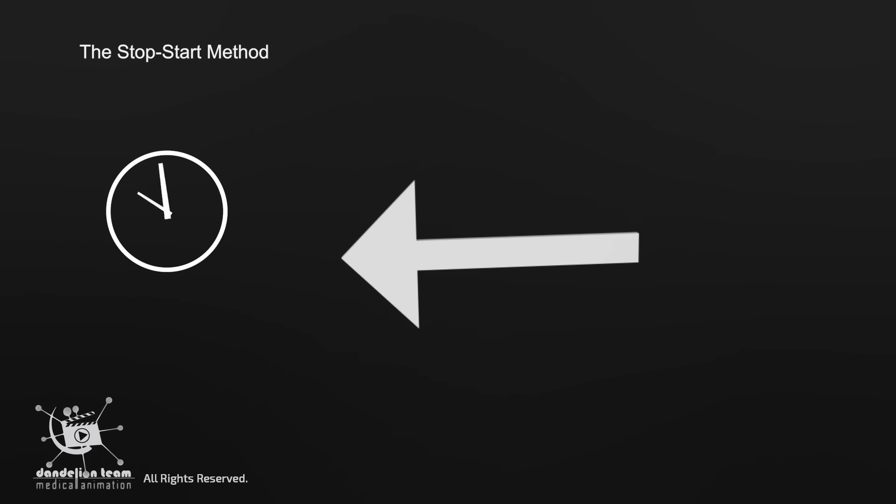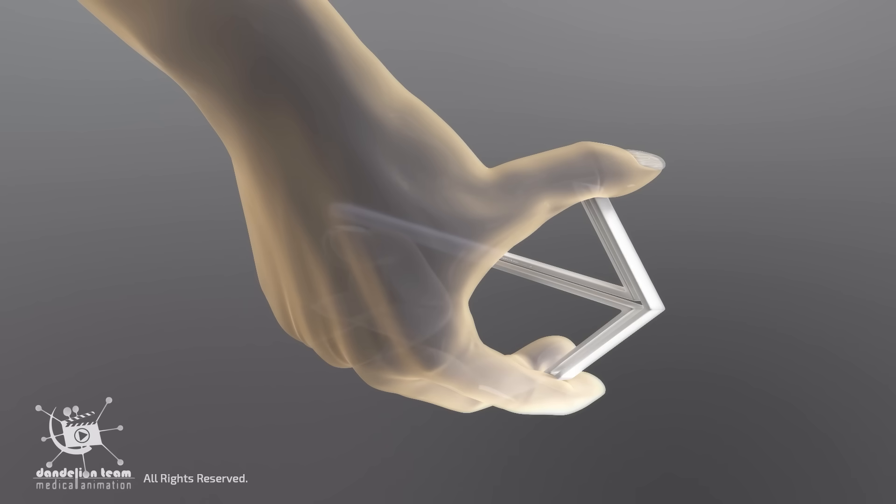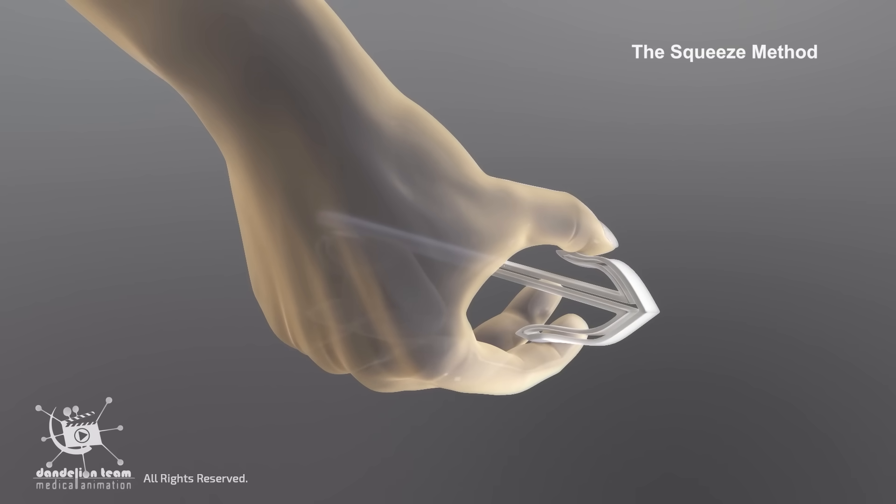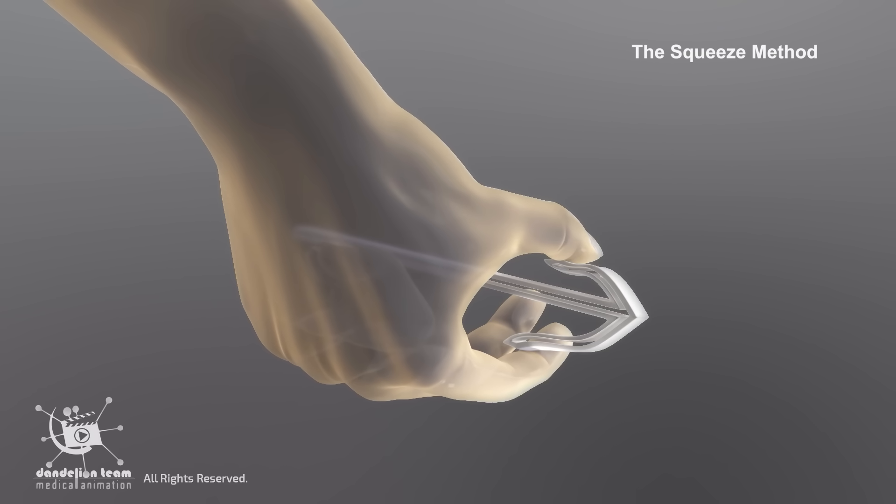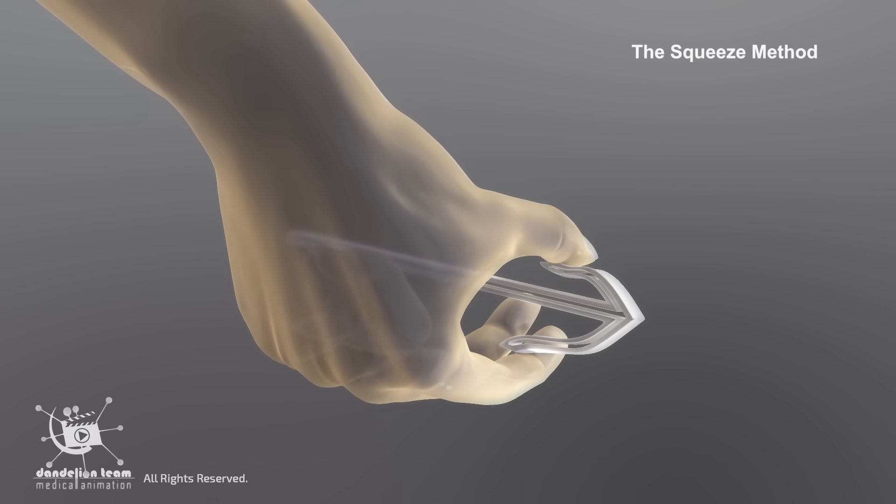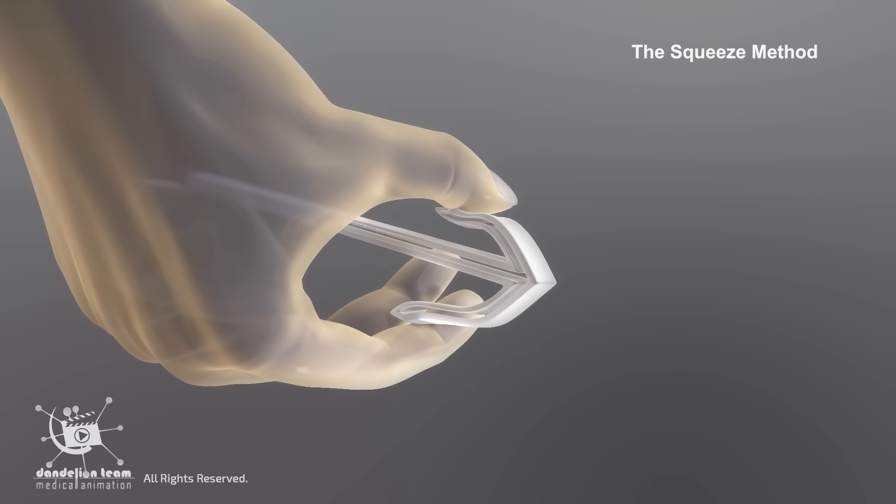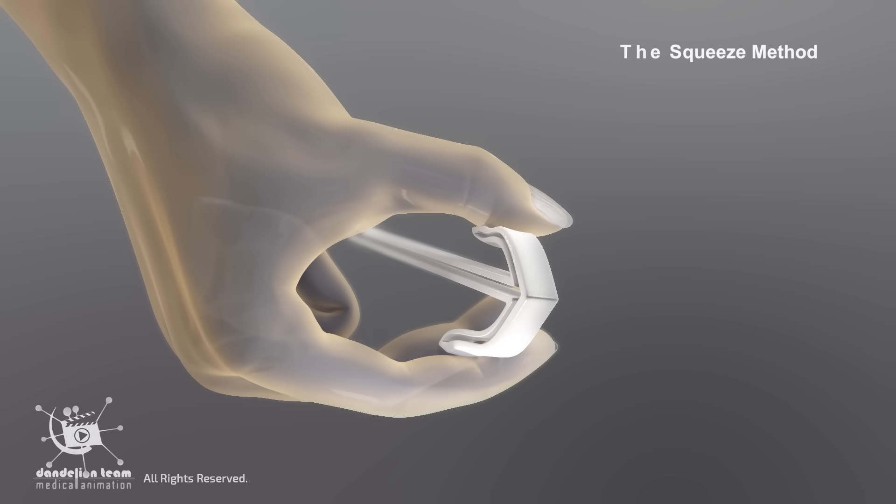Over time, it can help to enhance self-awareness and control and improve sexual endurance. The squeeze method involves firmly squeezing the head of the penis for several seconds at the moment before ejaculation becomes inevitable until the urge to ejaculate passes. This is repeated until ejaculation occurs. This method gradually improves control over ejaculation by delaying the process.